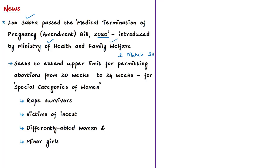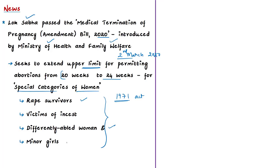The 2020 bill seeks to amend the Medical Termination of Pregnancy Act of 1971, which provides for the termination of certain pregnancies by registered medical practitioners. The new bill seeks to extend the upper limit for permitting abortions from 20 weeks to 24 weeks for special categories of women. These special categories include rape survivors, differently-abled women, minor girls, and victims of incest. The bill also adds a definition of termination of pregnancy to mean a procedure undertaken using medical or surgical methods.